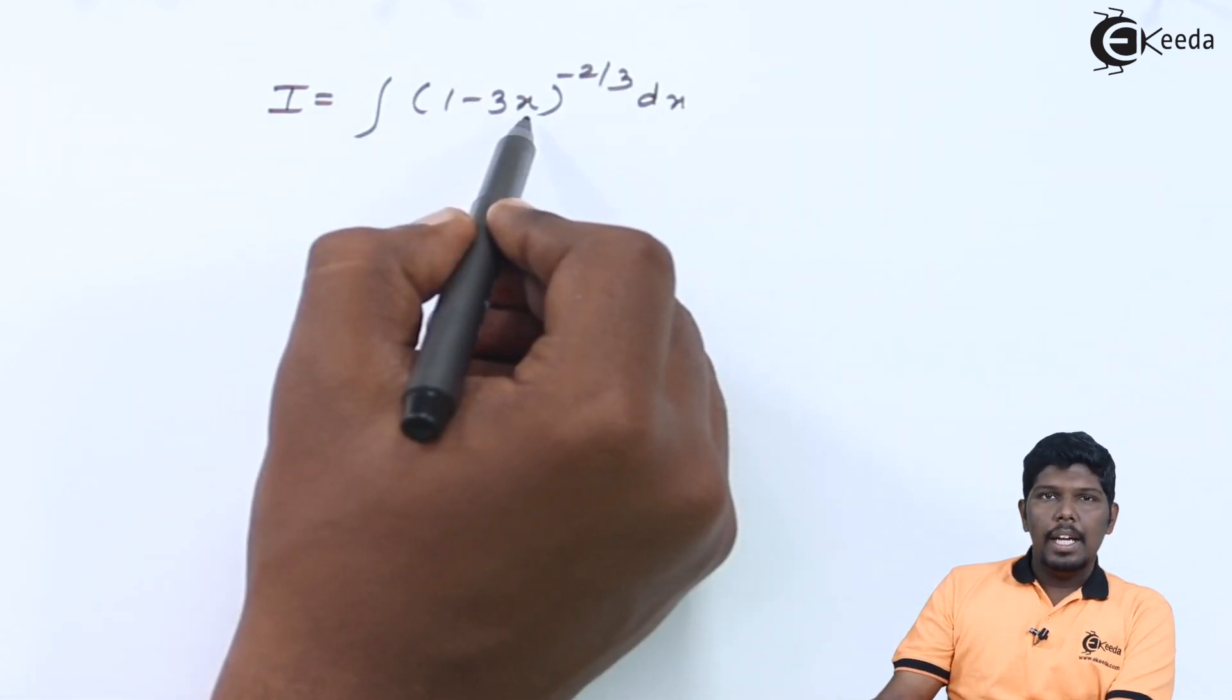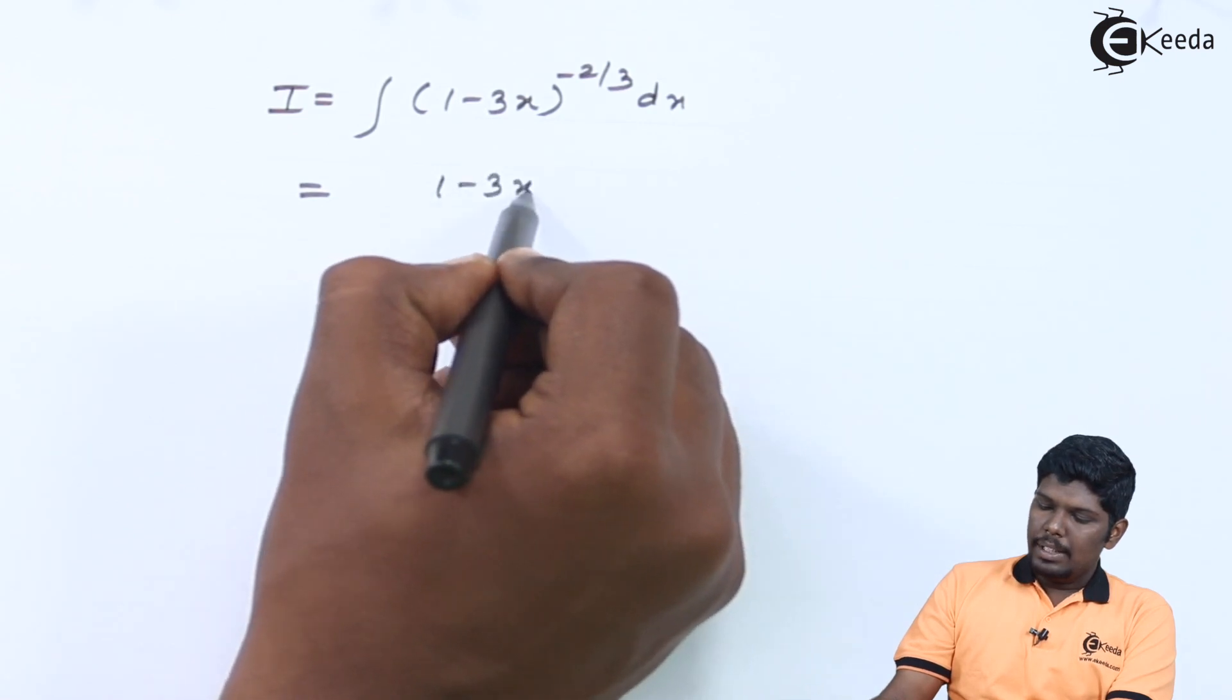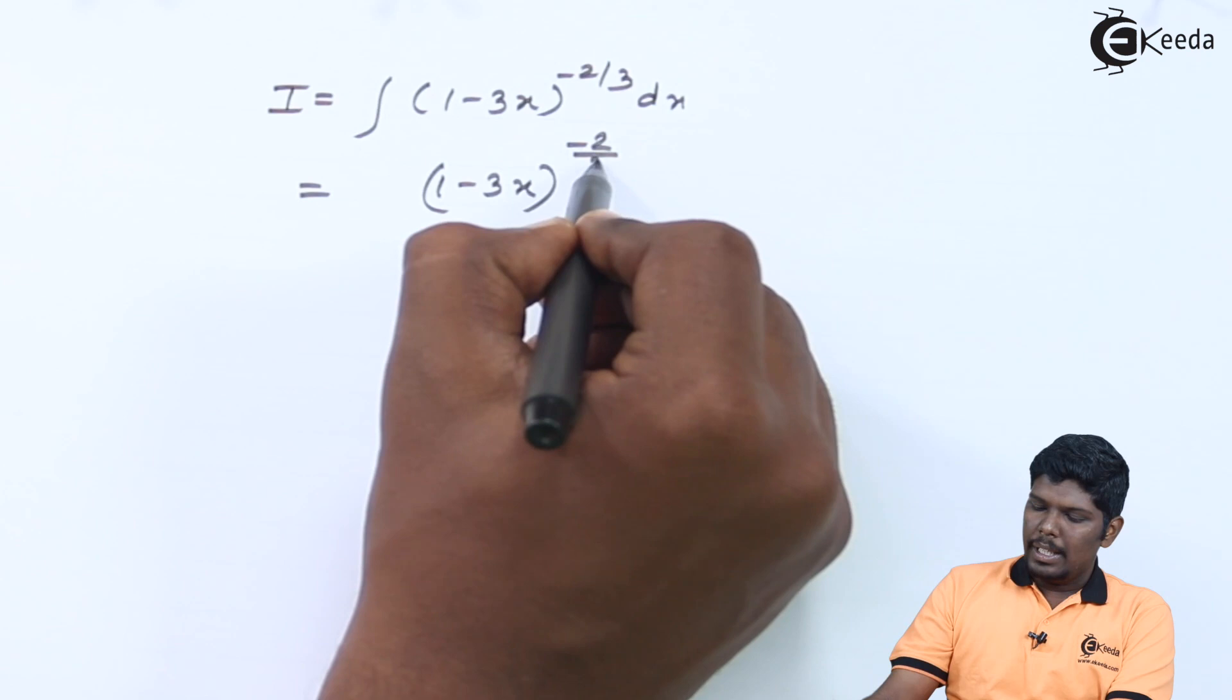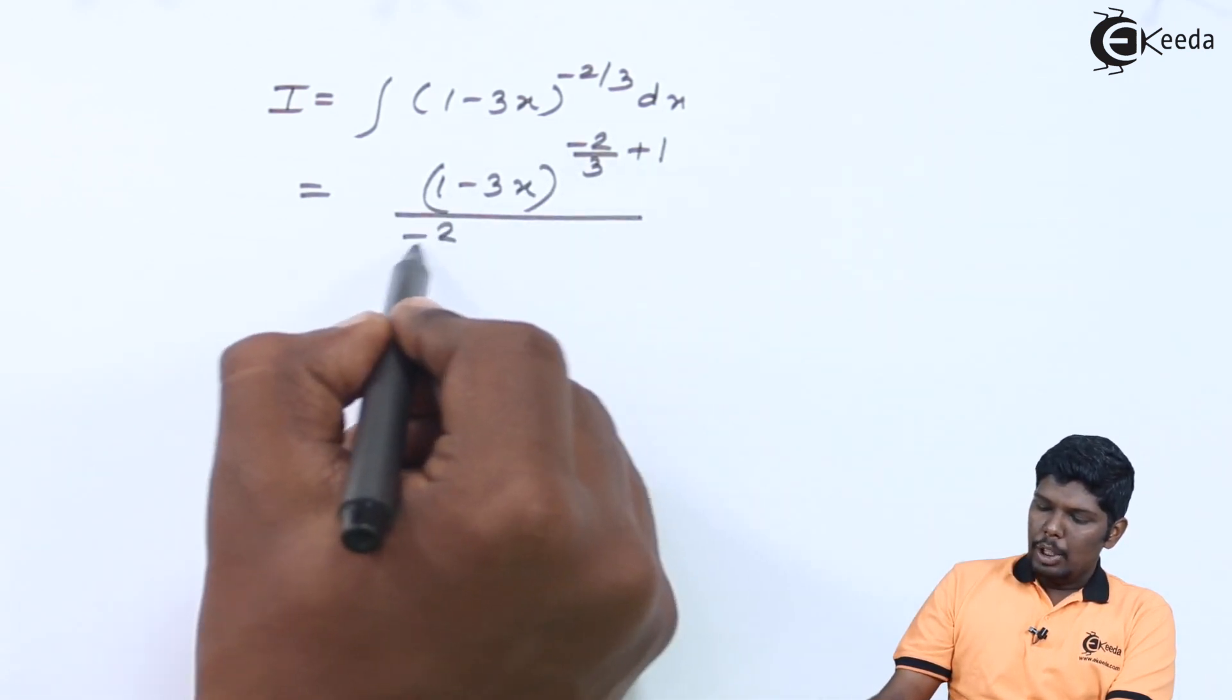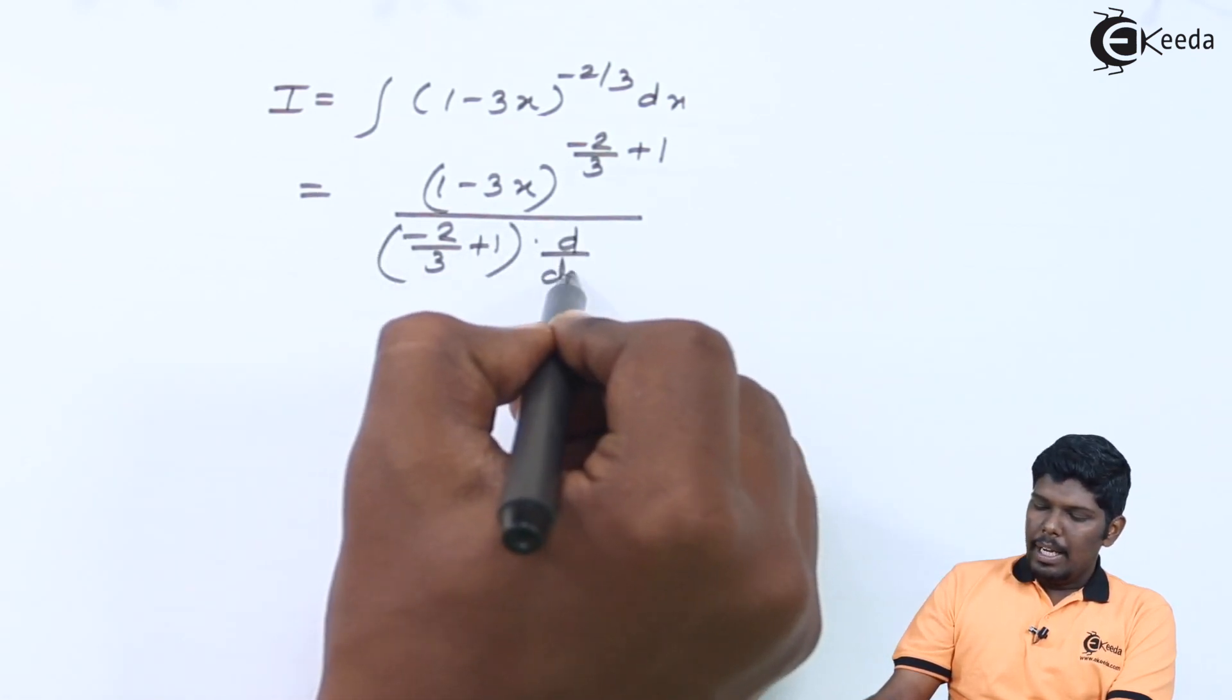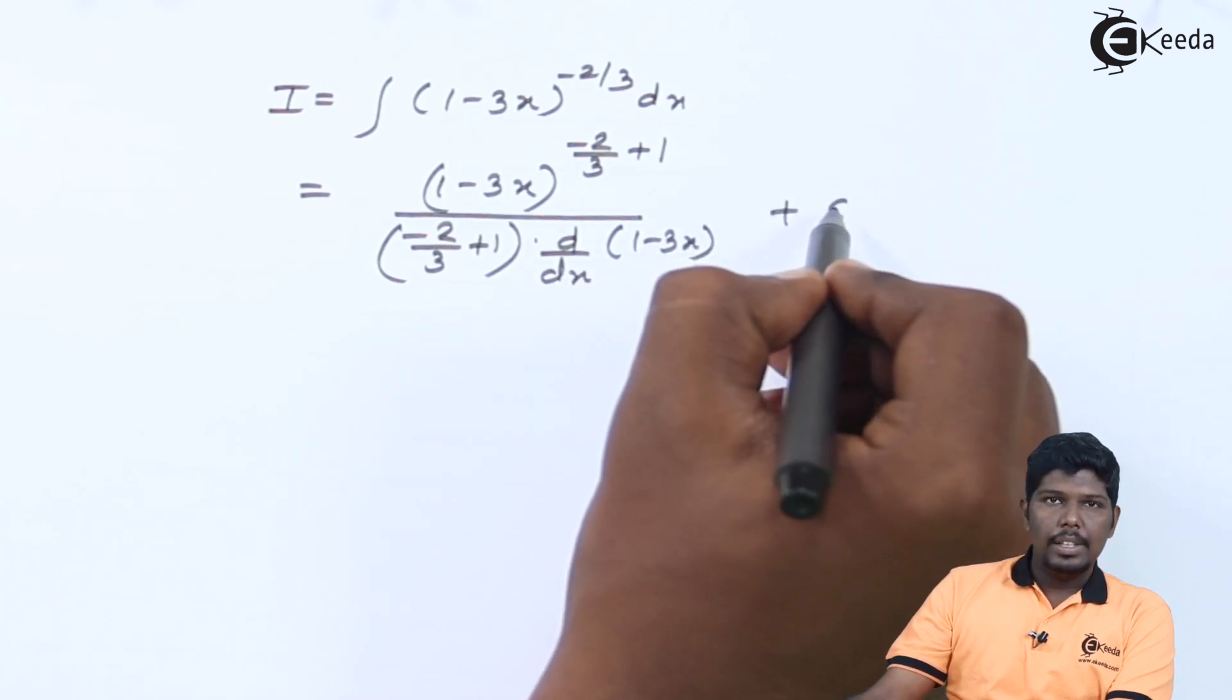Comparing 1 minus 3x as x, its integration will be (1 minus 3x) raise to we have n plus 1, that is minus 2 by 3 plus 1, 1 upon (minus 2 by 3 plus 1), into d by dx of (1 minus 3x) plus we have c.